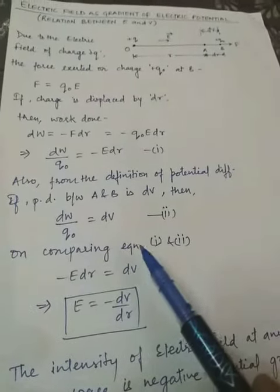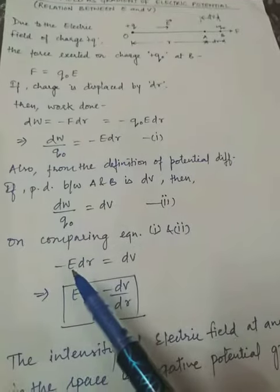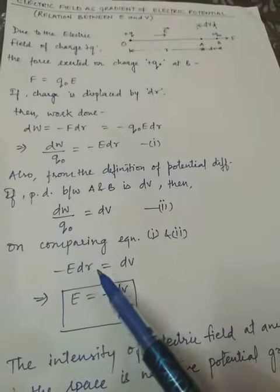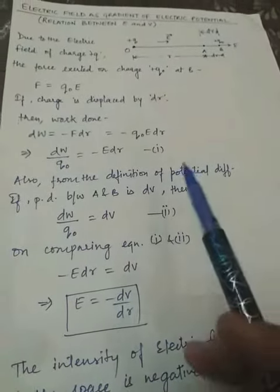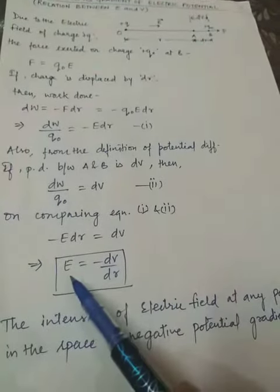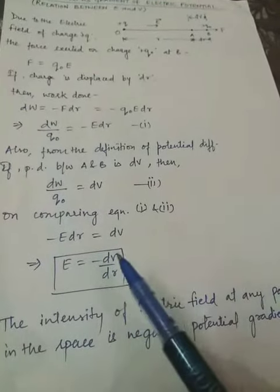On comparing equation one and two, we get minus E DR equals DV, or we can say E equals minus DV upon DR.